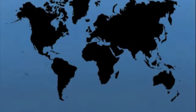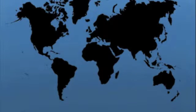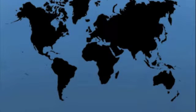Here we show a simulation of world population growth. Each dot represents 1 million people. We will start in the year 1107 AD, the era of the Crusades, and end with what is expected in the year 2030.